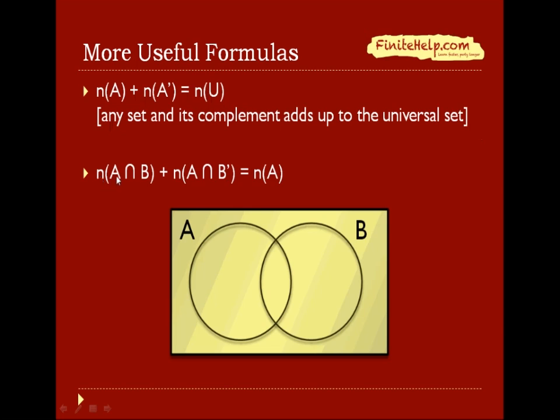And here you have the number of elements in A intersect B plus the number of elements in A intersect B prime is the number of elements in A. And here you can see A intersect B is this middle region here. And A intersect B prime, which is the A without the B, is this crescent-shaped region here. So we add this region and this region together, you have the entire of A.